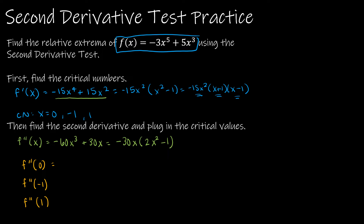If I take f''(0), I get -30(0)(2(0)² - 1) = 0. When we get 0, the test fails. So the second derivative test didn't work for x = 0 — we'll come back to that in a minute.